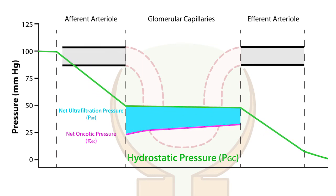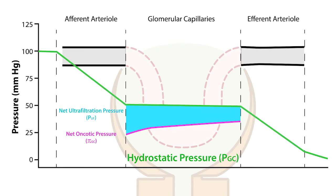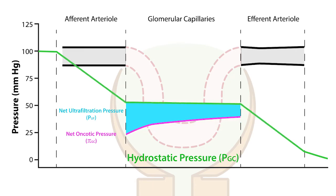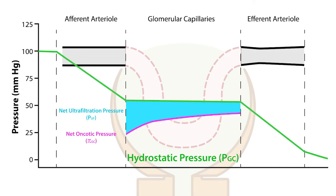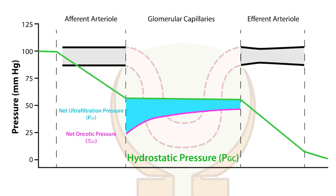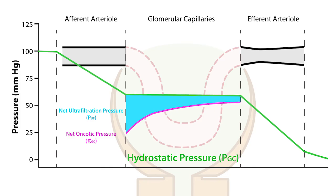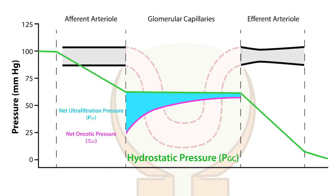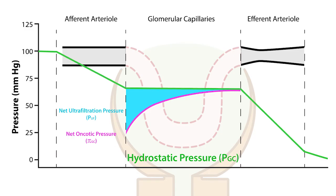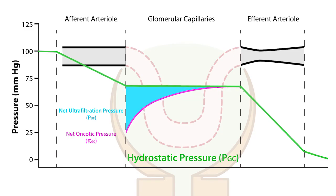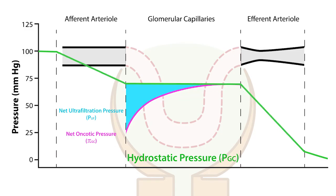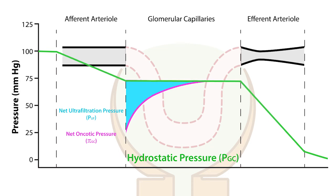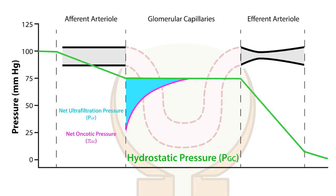Conversely, as efferent arterial resistance increases, as shown by the narrowing of the efferent arterial, we see an increase in glomerular capillary hydrostatic pressure, followed by an initial increase in net ultrafiltration pressure, or GFR, which occurs because of the increased back pressure created within the glomerular capillaries. Notice that as the hydrostatic pressure continues to increase with increased efferent arterial resistance, the net ultrafiltration pressure, or GFR, paradoxically decreases. This is because the net oncotic pressure increases, which outpaces the increasing glomerular capillary hydrostatic pressure.